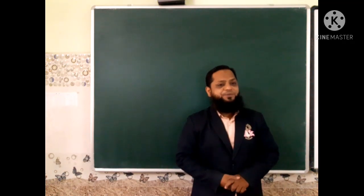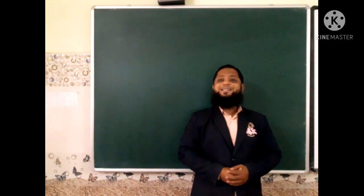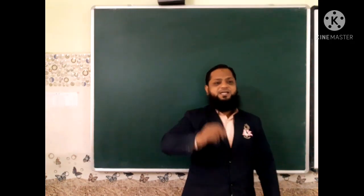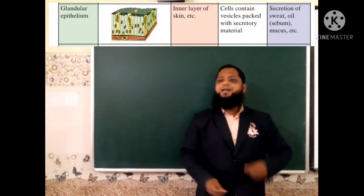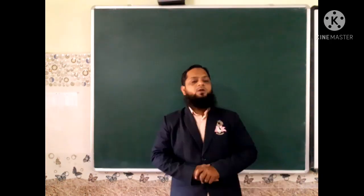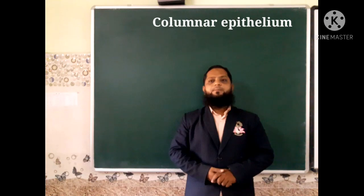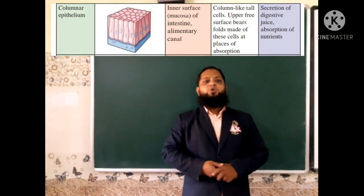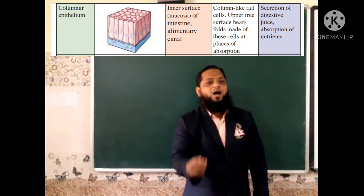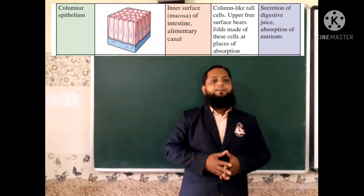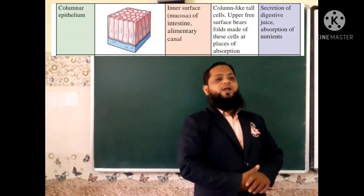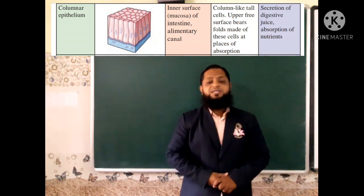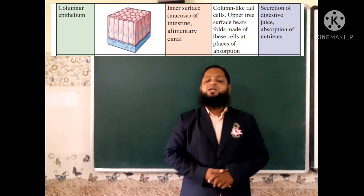Third is glandular epithelium, found in the inner layer of the skin. Cells contain secretory material, and its main function is secretion of sweat, oil, and mucus. Fourth is columnar epithelium, found in the inner surface of the intestine and alimentary canal. Columnar epithelium cells look like tall columns. The upper free surface bears folds which are responsible for absorption. The main function is secretion of digestive juice and absorption of nutrients.